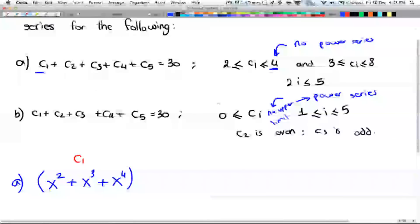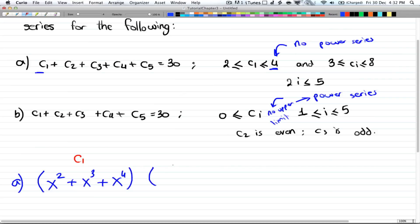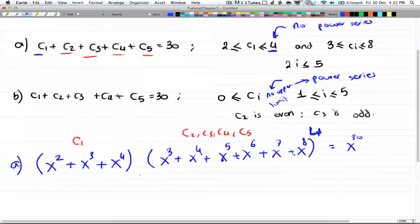Well, the rest, you have C₂, C₃, C₄, and C₅, are between 3 and 8. So you can select it 3 times, 4 times, 5 times, 6 times, 7, or 8. So that takes care of C₂. But since C₂, C₃, C₄, and C₅ are the same, then you just raise it to the power of 4, since we have four coefficients here: 1, 2, 3, 4, that all follow the same rule. And that takes care of C₂, C₃, C₄, and C₅. And that will be equal to x to the power of 30. So that takes care of part A.